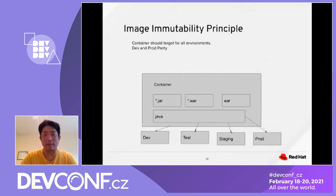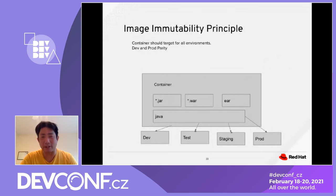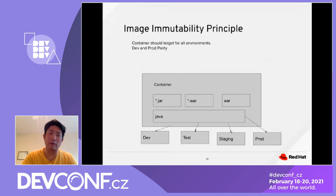Image Immutability Principle: the container image should be targeted for all environments. You should be able to use the same image for Dev, QA, and production without changing it. As discussed earlier, the way to achieve that is to move the application environment configuration out of the image and into ConfigMap or Secret.